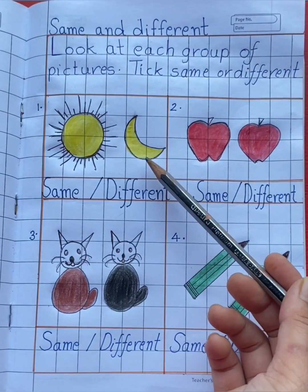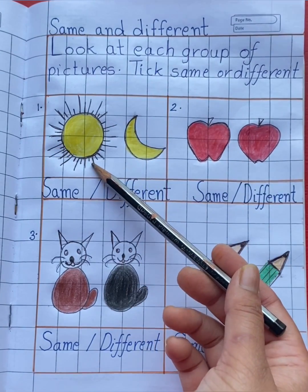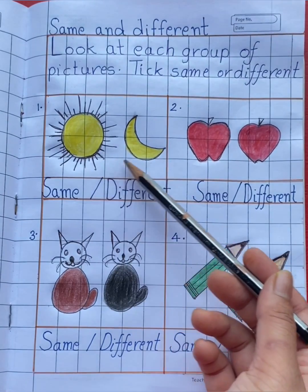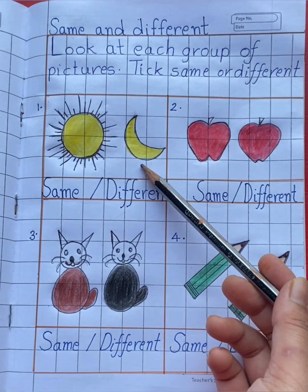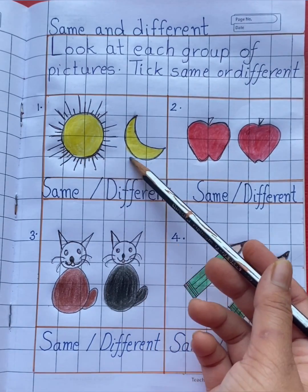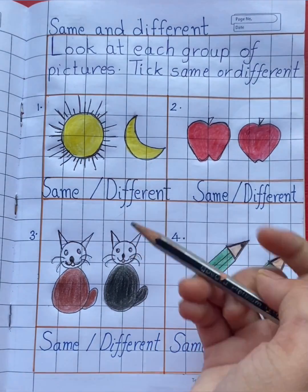See the first group. This is sun and this is moon. Sun, moon - are they same or different? Yes, they are different, so tick different.